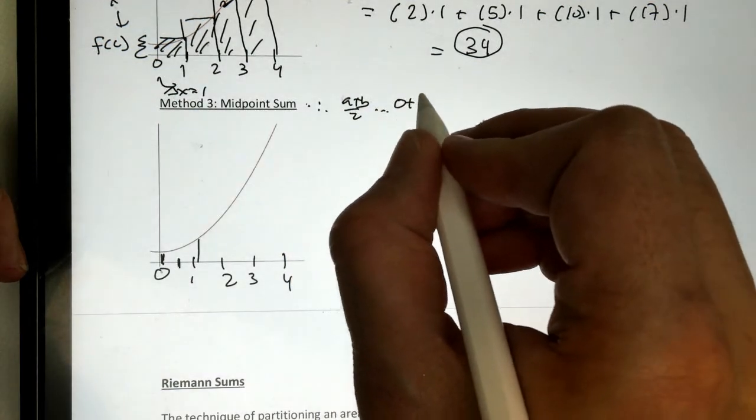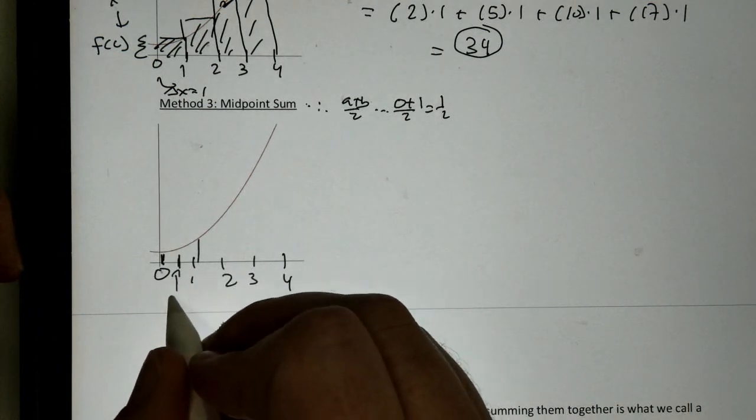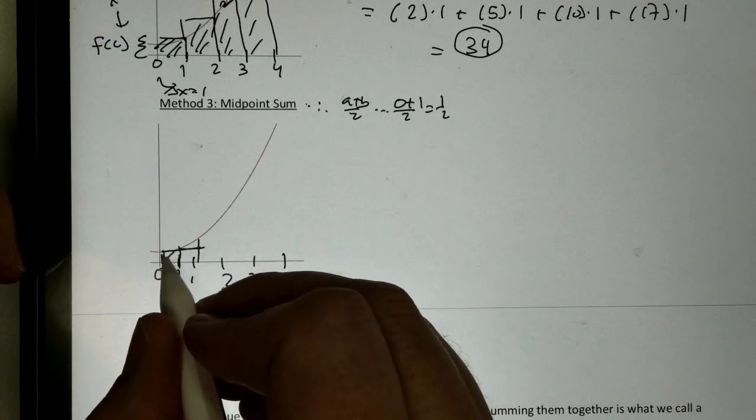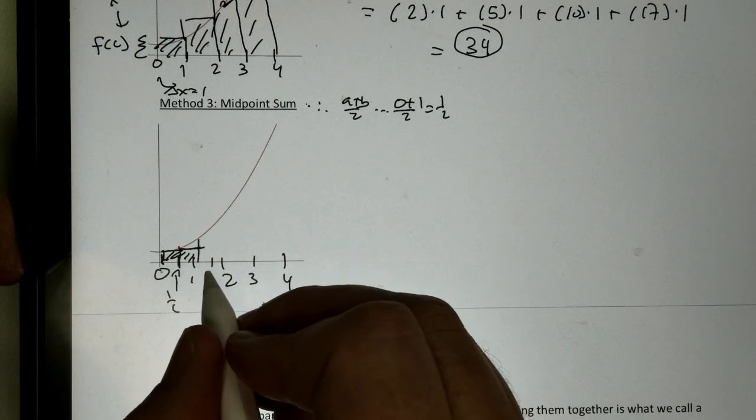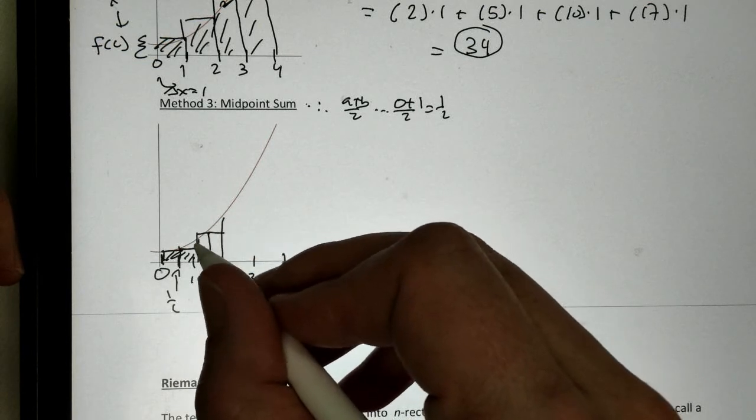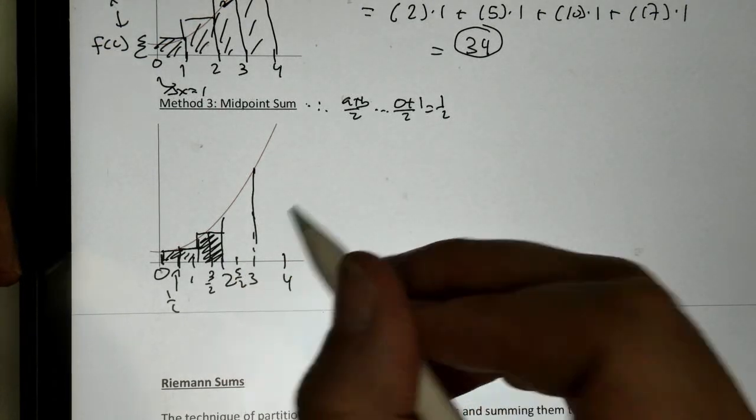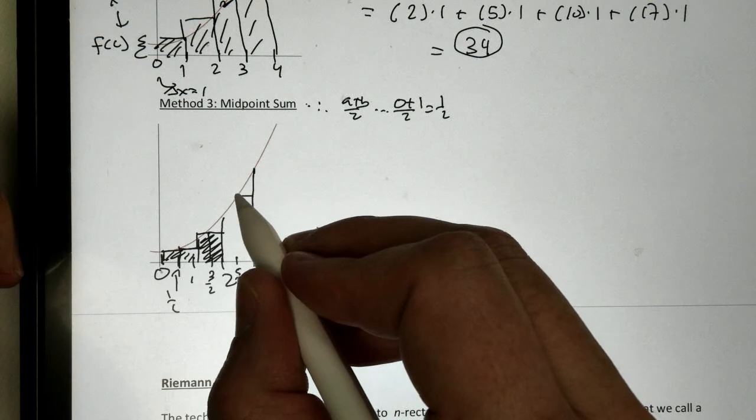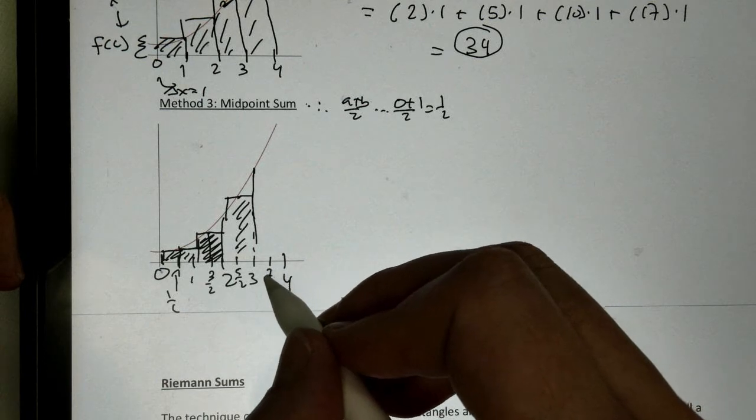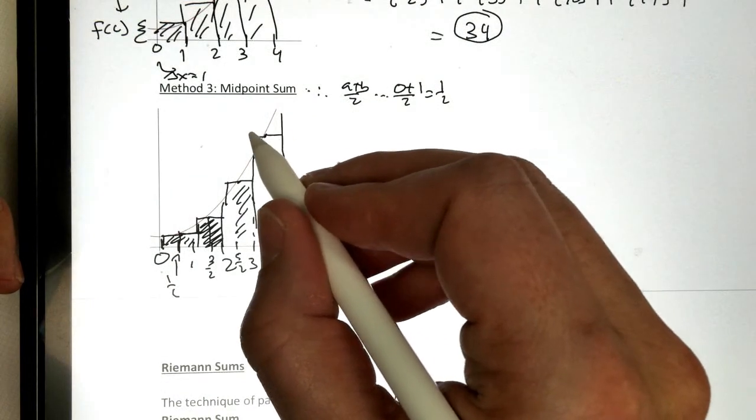So, if my first one, 0 plus 1 divided by 2 is 1 half. So, I am actually here at 1 half. And I can draw a rectangle like so at 1 half. Now, if you notice that 1 half is kind of above and below. So, my next one, 3 halves. So, between 1 and 2, I am going to use 3 halves. Between 2 and 3, that's 5 halves. And if you notice, this is part above, part below. So, it's going to be, this is probably going to be slightly more accurate. 7 half is my next one.